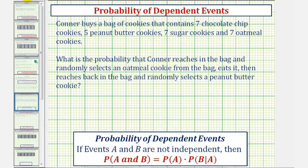So in our case, we're trying to find the probability that Connor first selects an oatmeal cookie, which we'll use O to represent oatmeal, eats it, and then goes back into the bag and selects a peanut butter cookie, which we'll use P for peanut butter cookie. And again, these are not independent, so this is equal to the probability of selecting an oatmeal cookie times the probability of selecting a peanut butter cookie given an oatmeal cookie has already been selected.